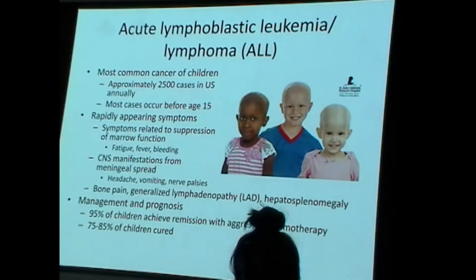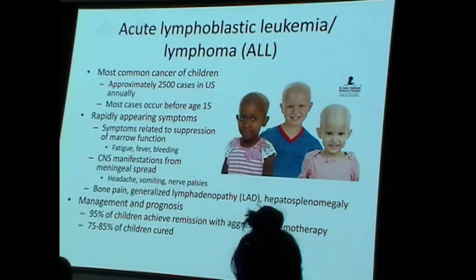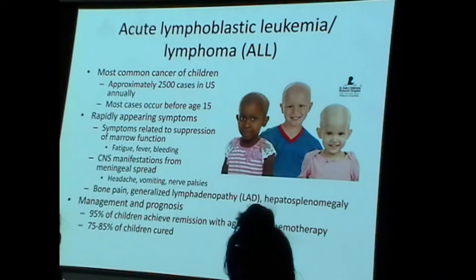Our first lymphoma is helpful for underscoring a key point. This is called acute lymphoblastic leukemia, also known as acute lymphoblastic lymphoma — abbreviated ALL. That dual name means this lymphoid neoplasm is just as likely to present as a tumor mass somewhere as it is to present as a liquid cancer throughout the bone marrow and blood.